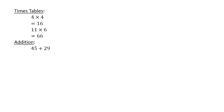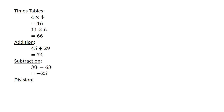Addition: 45 plus 29 equals 74. Subtraction: 38 minus 63 equals negative 25. Division: 30 divided by 3 equals 10.